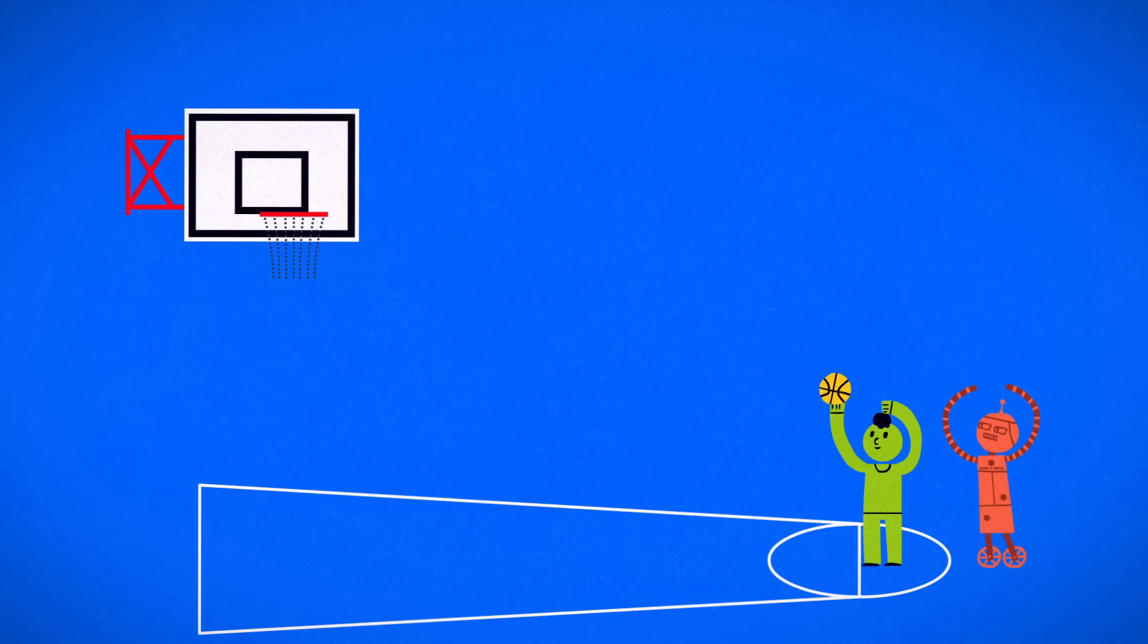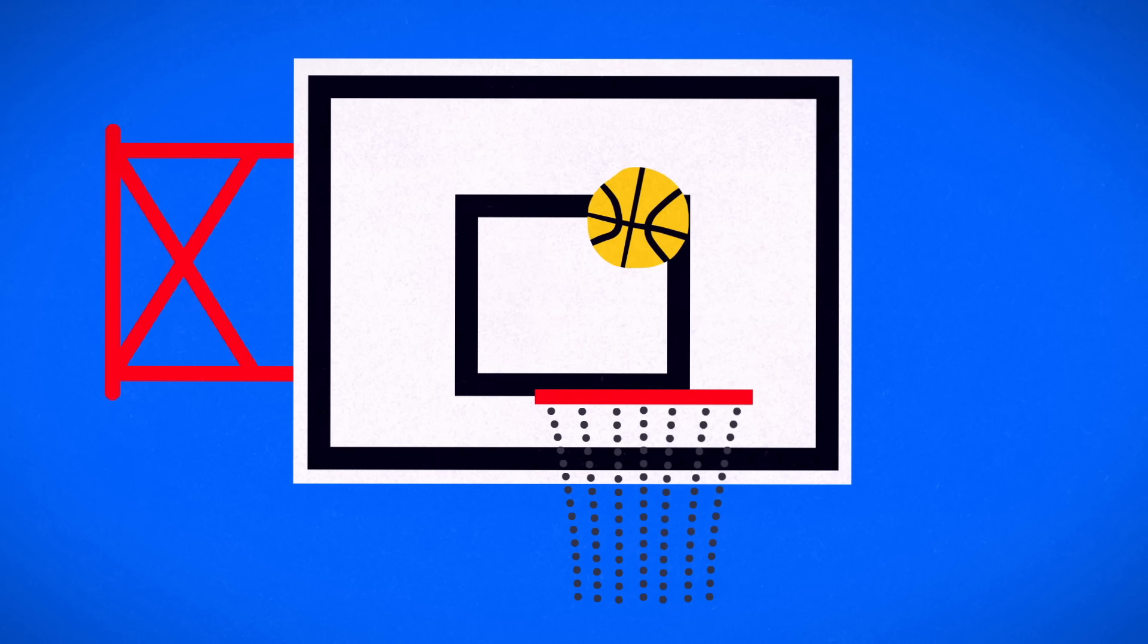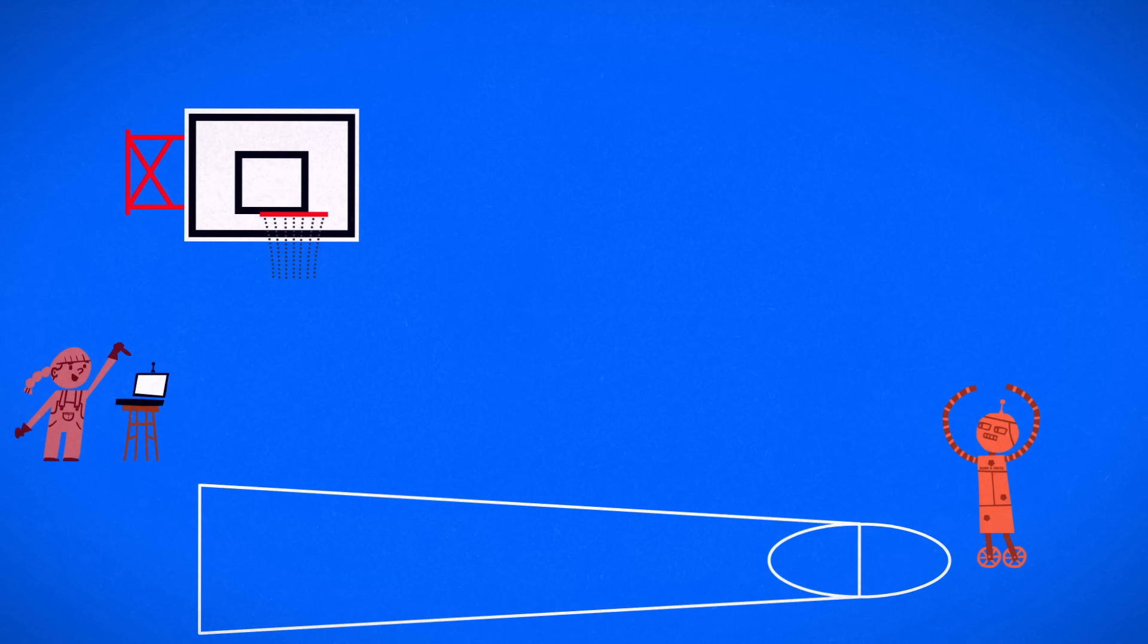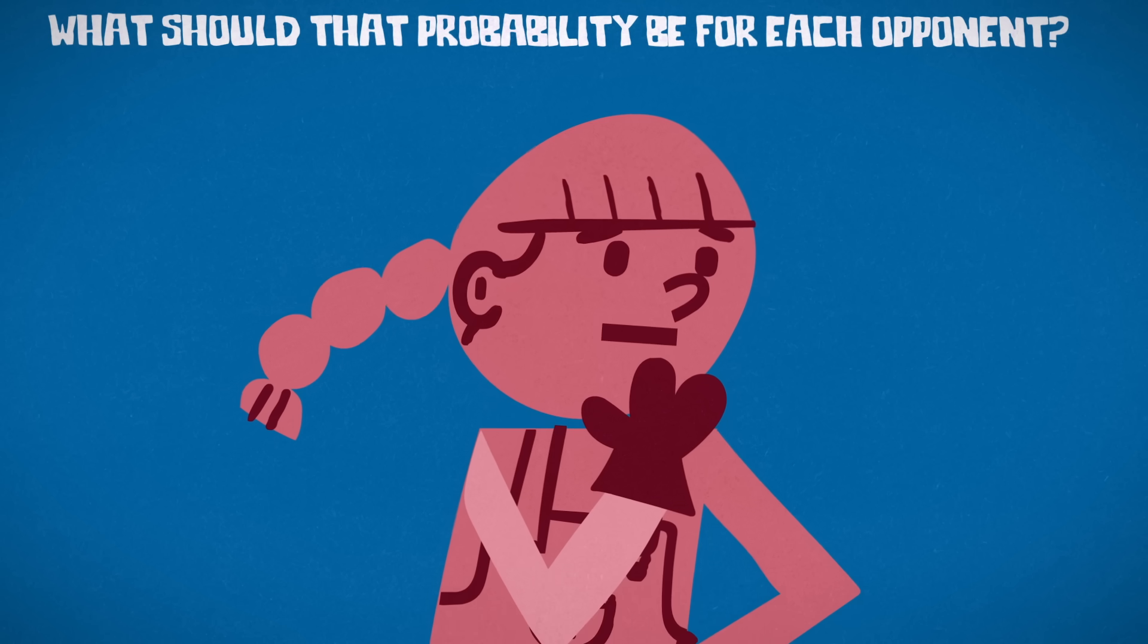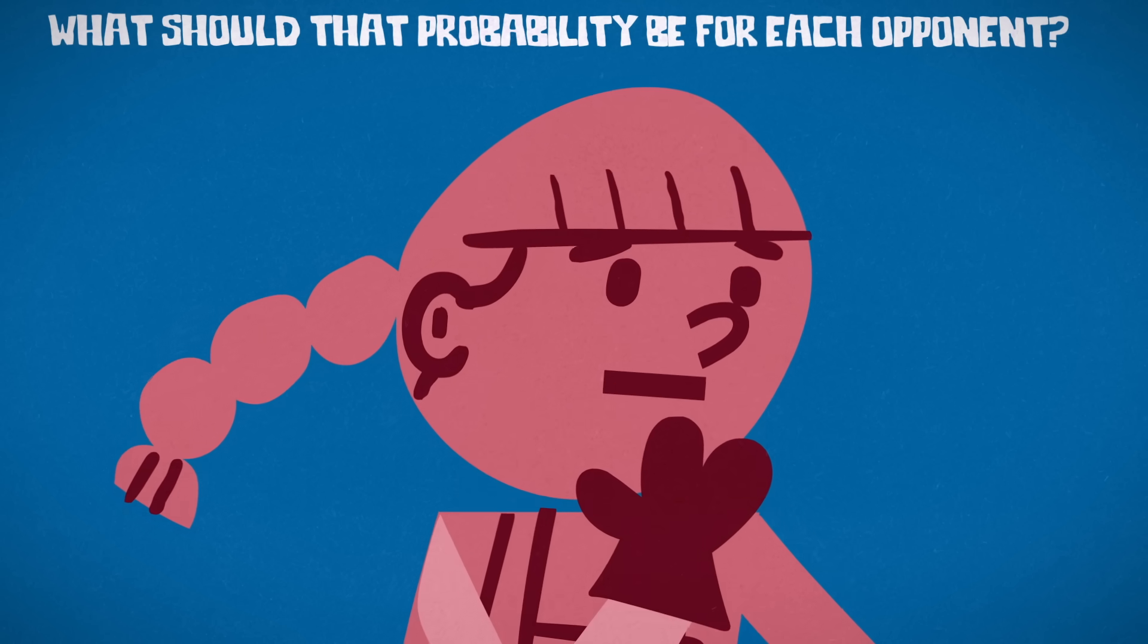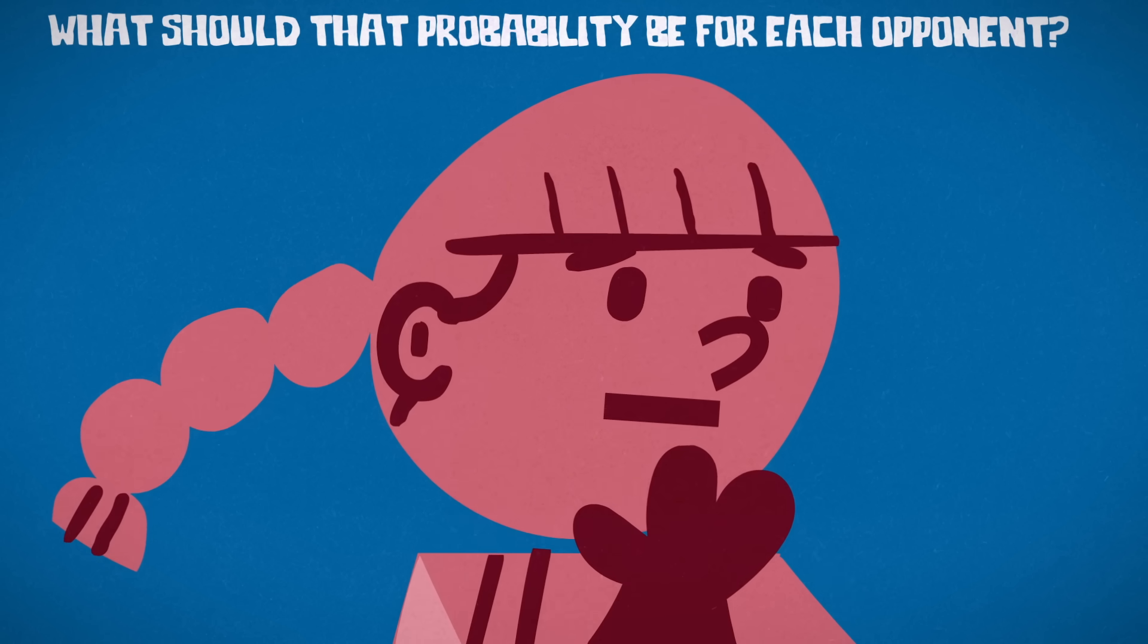In each match, the human shoots first, then the robot, then the human again, and so on, until someone makes the first successful basket and wins. You can remotely adjust the Dunk-O-Matic's probability between opponents. What should that probability be for each opponent, so that the human has a 50% chance of winning each match?